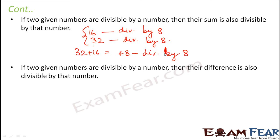We have already covered divisibility rules from 2 through 12. You might ask how to know if a number is divisible by 24, for example. That is where these rules are useful — find out if the number is divisible by the factors of 24, and you will be able to decide whether it is divisible by that particular number.